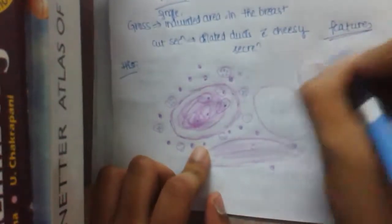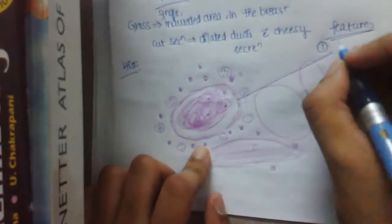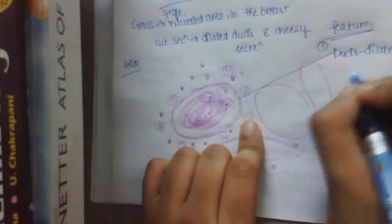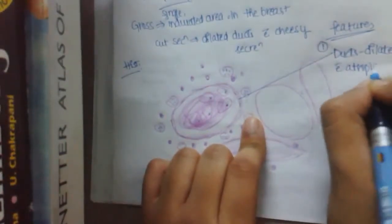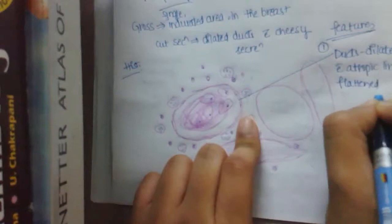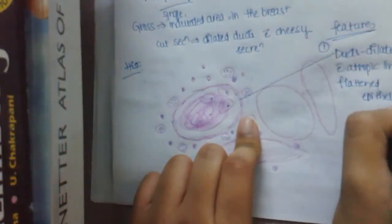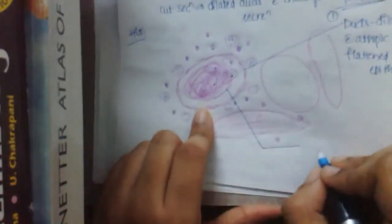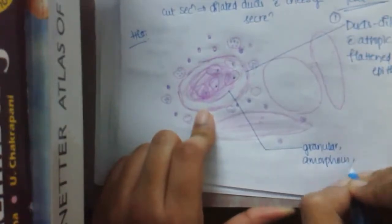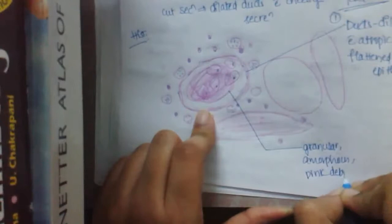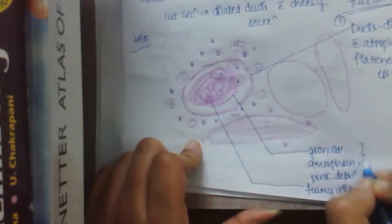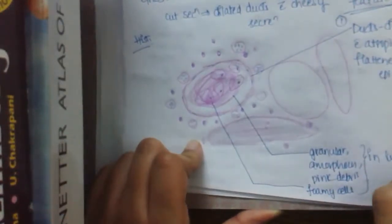So the features include: first one is the ducts dilated. You can see the dilated ducts with atrophic lining, flattened epithelium. You can see flattened epithelium here. And in the lumen,